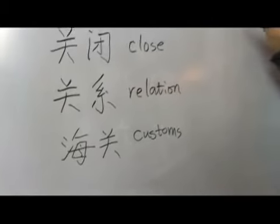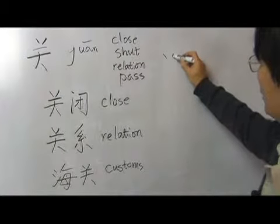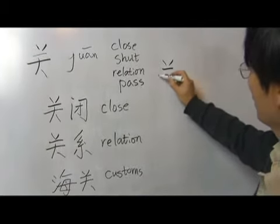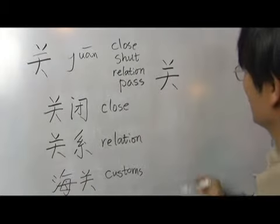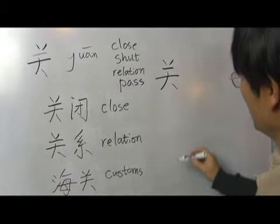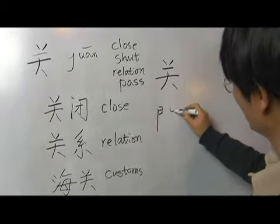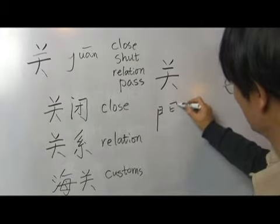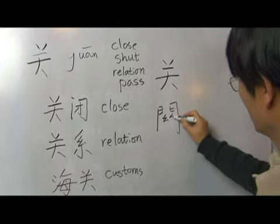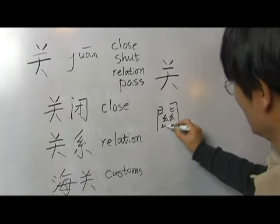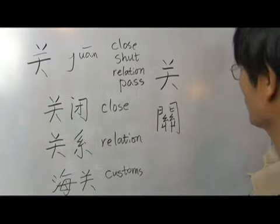Okay, 关 — stroke order: 点, 点, 横, 横, 撇, 点. 关, and the traditional character looks like that. 关.